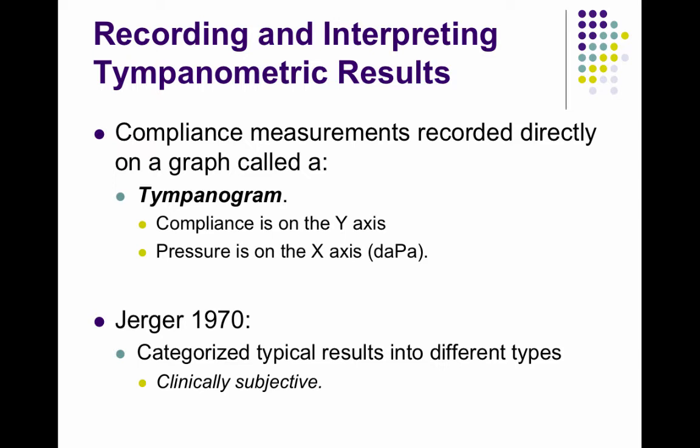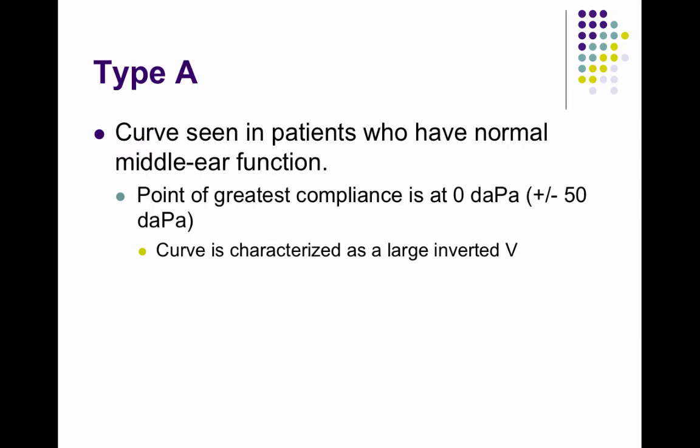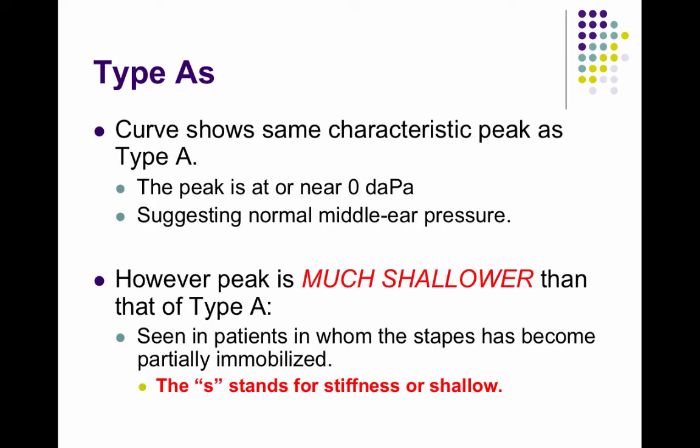Tympanograms are categorized as A, AS, and AD — though these are clinically subjective. A type A is a curve seen in patients with normal middle ear function. The point of greatest compliance is at atmospheric pressure, zero deca-pascals, give or take 50 deca-pascals. It's characterized by a large inverted V shape.